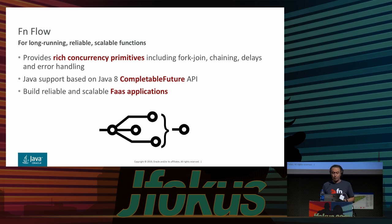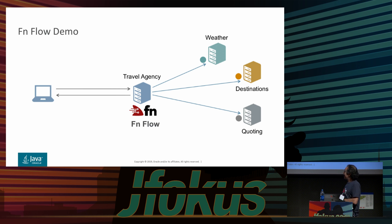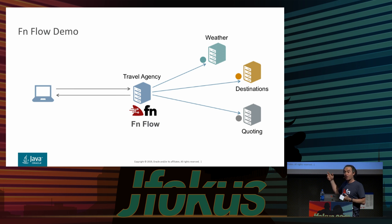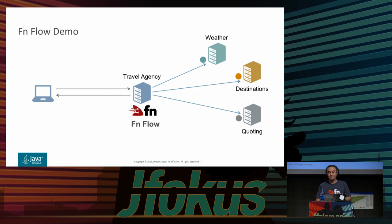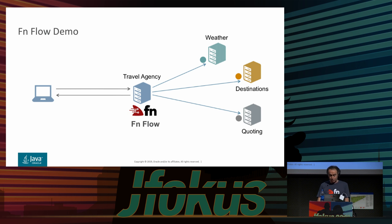Let me give you a demo. I have a small travel application — I'm going to ask for recommendations on where to go on vacation. I have separate functions: one gives destination options with random choices, one gives quotes for how much it costs to go to a destination like Paris, and another gives the weather. Those are the things a travel agency wants to know: where can I go, how much will it cost, what's the weather. These are all separate functions, and I need to compose them together.